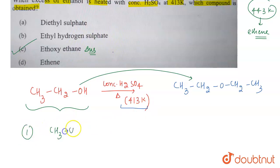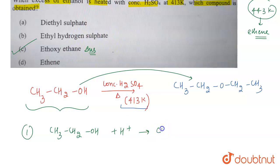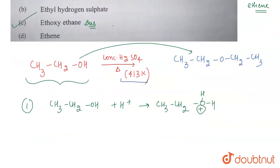Now we can discuss the mechanism of the formation of ether. The first step is protonation: CH₃CH₂OH gets protonated by the H⁺ of H₂SO₄, and it forms CH₃CH₂OH₂⁺.